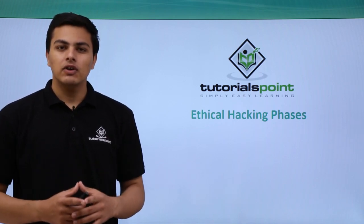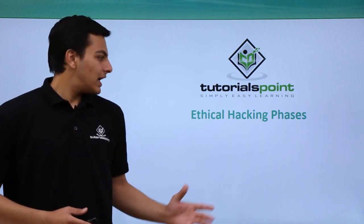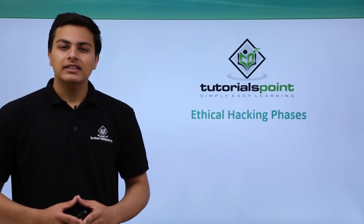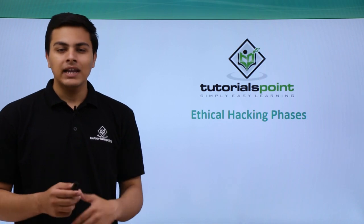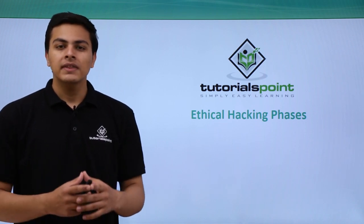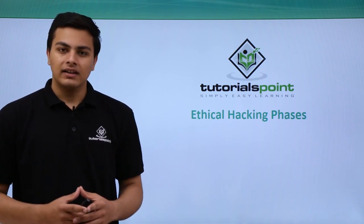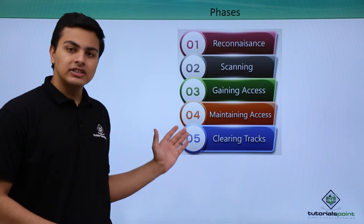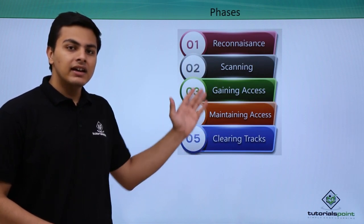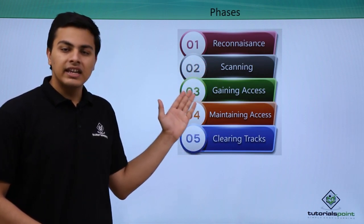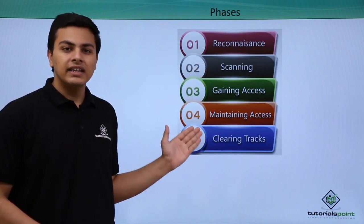Hello everyone. In this video we will talk about ethical hacking phases, or the steps which one has to follow in order to perform a successful hack. There are five phases of ethical hacking: reconnaissance, scanning, gaining access, maintaining access, and clearing tracks.